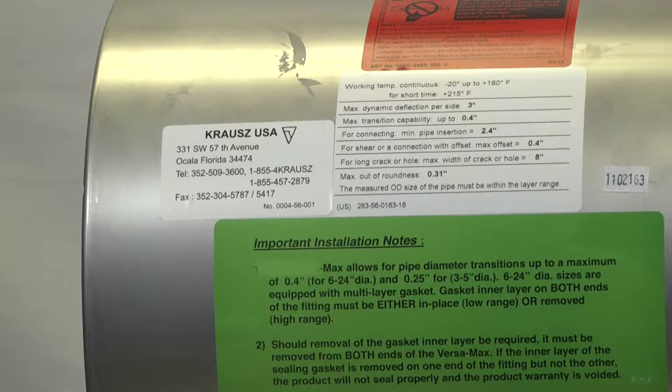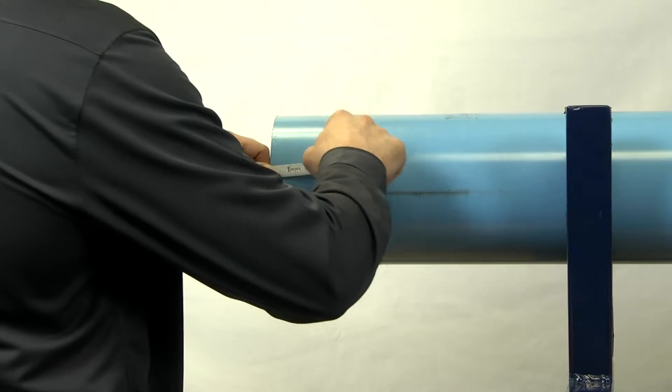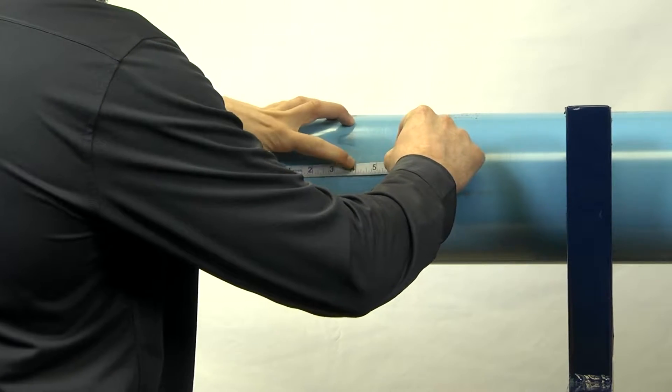Mark each pipe end to an even distance from the break or leak according to the length of the HiMax Clamp.